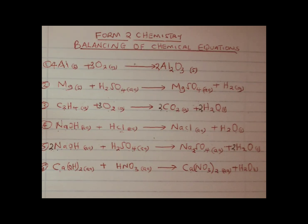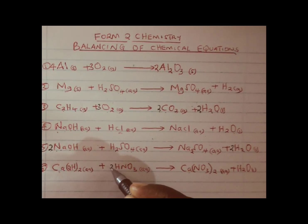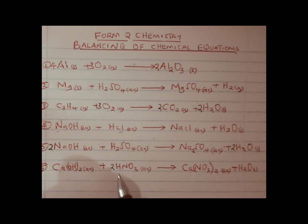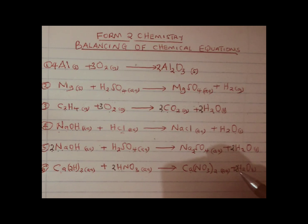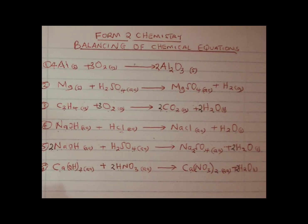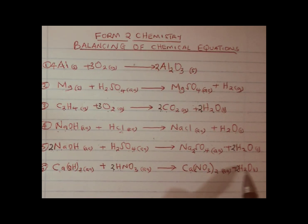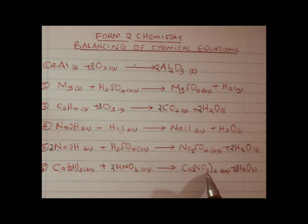We can now do the balancing. We look at the hydrogens: we have 1 here, so we make it even by writing 2 in front of nitric acid, such that we have 2 hydrogens plus 2, giving 4. We write 2 in front of water to make the hydrogens 4. Now consider oxygens: we have 3 times 2, which is 6, plus 2, giving 8. On the product side, 1 times 2 = 2, plus 6 = 8. This equation is now balanced.